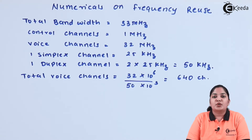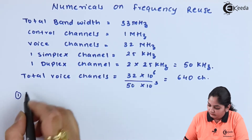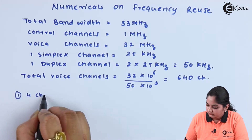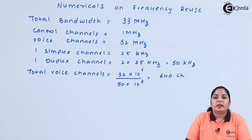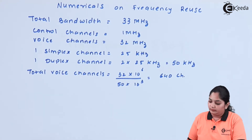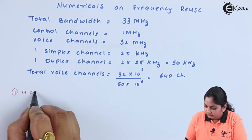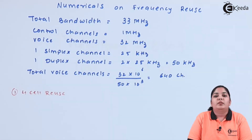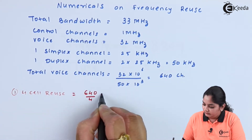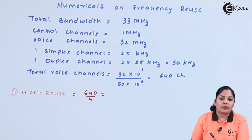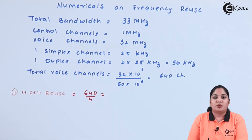Now we will see how the frequency distribution takes place in 4 cell reuse. For 4 cell reuse, we divide the total number of channels into 4 cells. The answer here is 160 voice channels per cell.